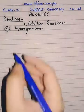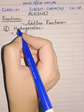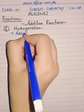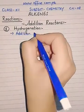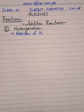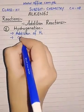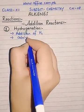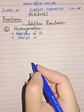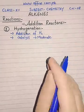The first reaction we are going to discuss is hydrogenation — you know what is hydrogenation, it is the addition of hydrogen. It is basically a process in which a molecule of hydrogen is added to an alkene in the presence of a catalyst. A catalyst will also take part and the pressure will be moderate.